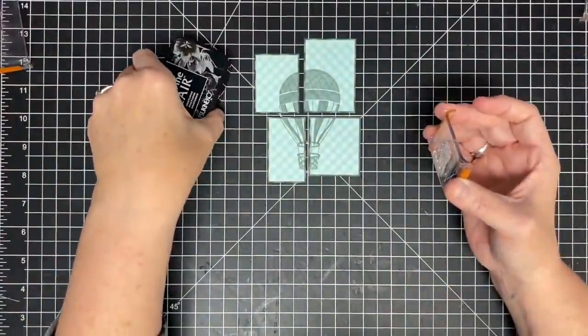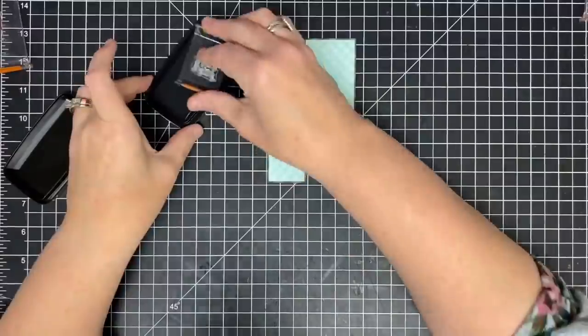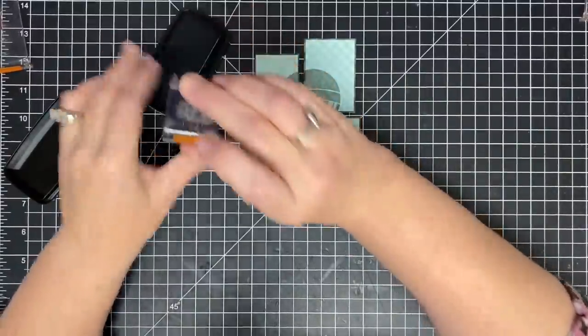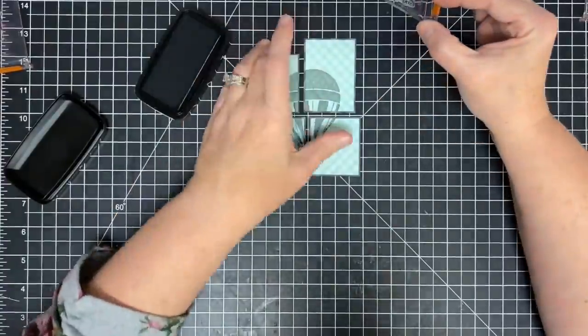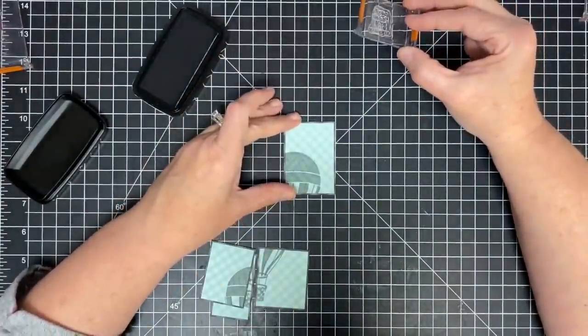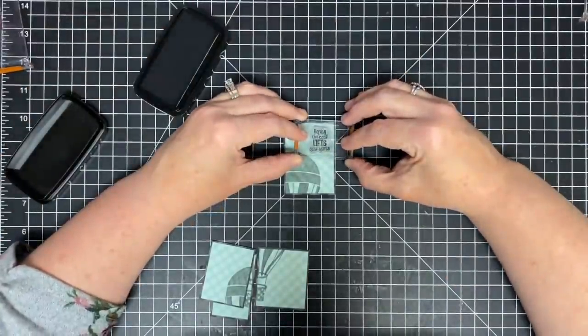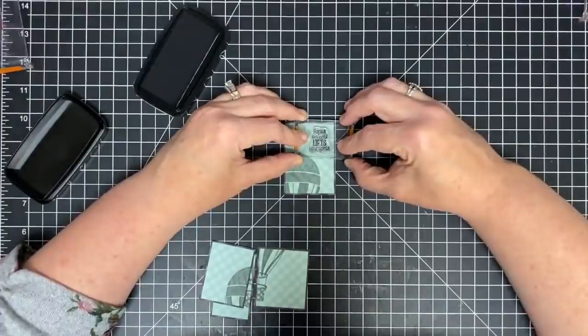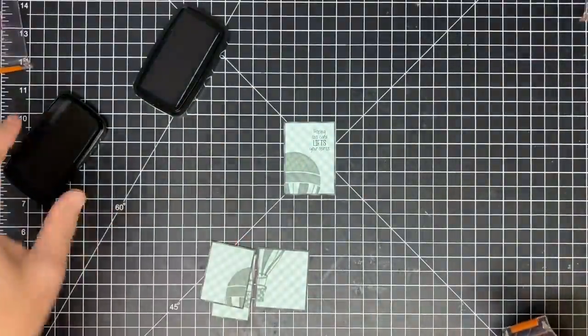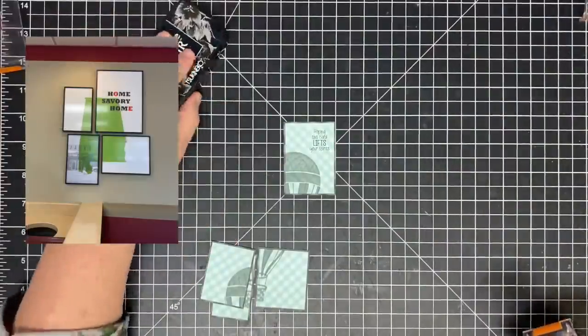So the sentiment's pretty easy. I want to use the sentiment from the stamp set that says hope this card lifts your spirits. So I'm going to stamp that in black at the top and I'm going to do black on the sentiment so you can really see it. Hope this card lifts your spirits. And that's not exactly where the sentiment was on this inspiration piece. It kind of overlapped, but I think that works really well.